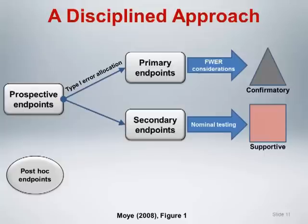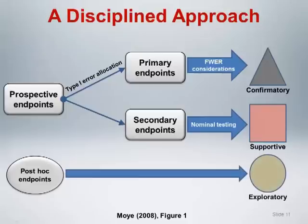Primary endpoints are considered confirmatory and are the primary goal of the scientific investigation. Secondary endpoints that are supportive of the primary endpoint should be tested at the nominal 0.05 significance level, but interpreted in the context of being supportive to the primary endpoints. All other analyses are considered post hoc or exploratory and are also tested at nominal levels, interpreted with careful consideration for their exploratory nature. Thus, significant exploratory results carry much less weight than supportive or confirmatory results. The weight of evidence for the primary conclusions of the study should rely primarily on the confirmatory endpoints.